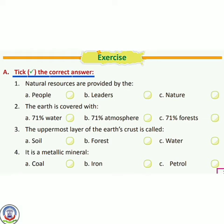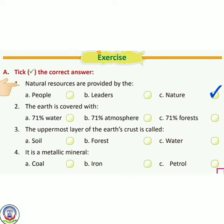Exercise A: Take the correct answer. Number 1 — natural resources are provided by... हमें natural resources कहां से मिलते हैं? Options are: people, leaders, nature. The correct answer is C, nature. हमें natural resources nature ने दिया है।